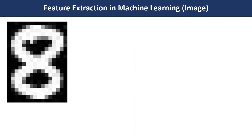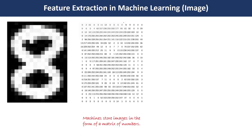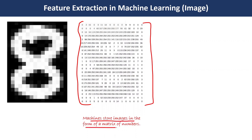The second type is image data. As a human, we are able to understand an image. This image is made of small pixels. But if we feed this image into a computer, the computer will not be able to understand it. So for that, we have to convert this image into a matrix or into a vector. Machines store images in the form of a matrix or numbers, so we convert the image into a matrix.